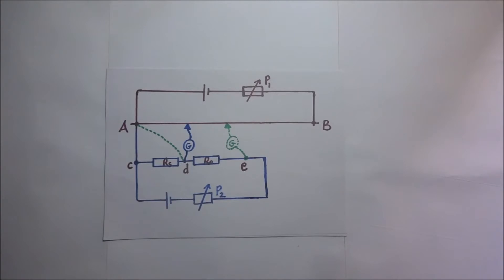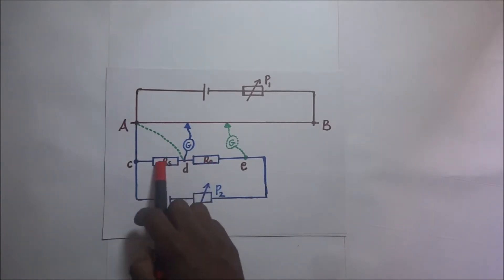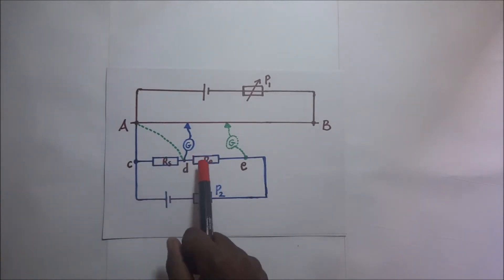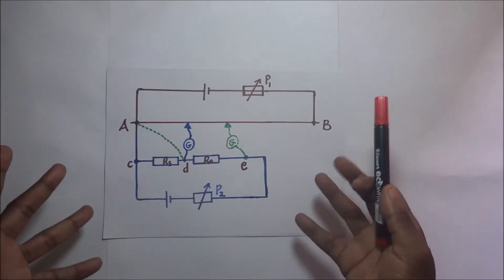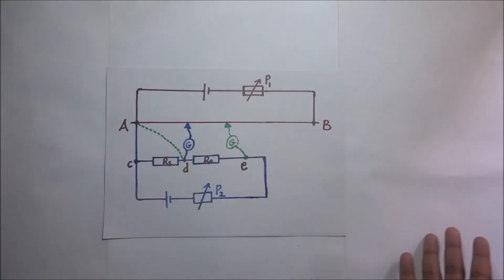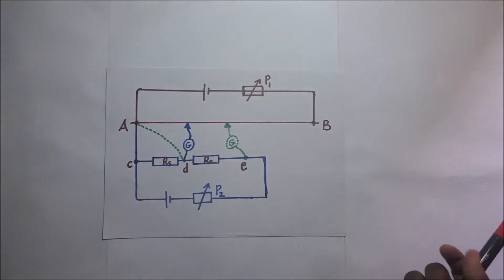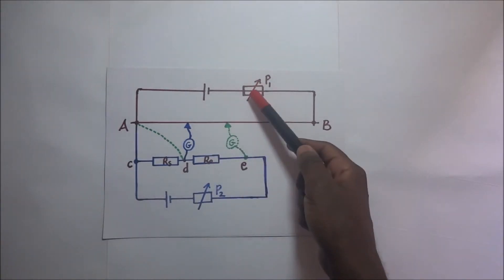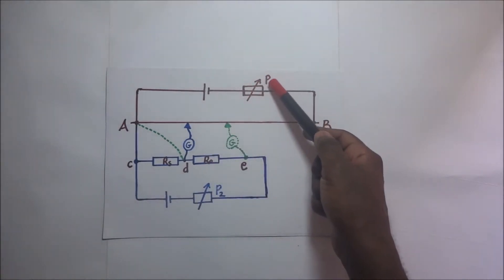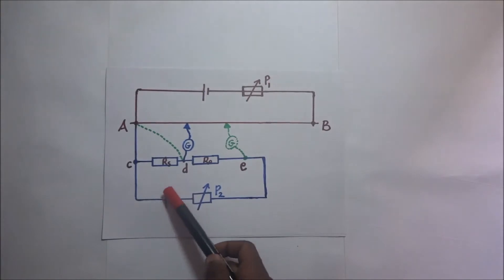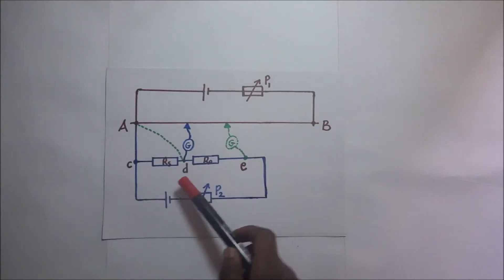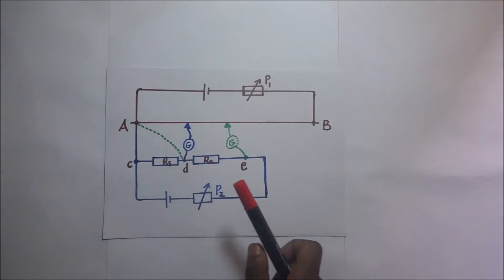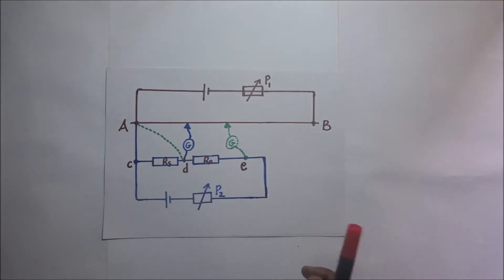The setup involves the driver cell with a variable resistor P1, and an EMF source in the secondary circuit. There are two major steps we are going to take. The first step is to balance the standard resistor RS against the slide wire, and the second step will balance the unknown resistor R₀.